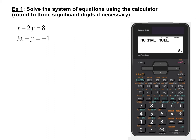We need to determine our coefficients and constants: A1, B1, C1, A2, B2, C2. For the first equation, we have just X, so the coefficient on X is 1, meaning A1 is 1. We have negative 2Y, so B1 is negative 2. It equals 8, so C1 is 8. For the second equation, 3X means A2 is 3. We have plus Y, so B2 is 1. That equals the constant negative 4, so C2 is negative 4.